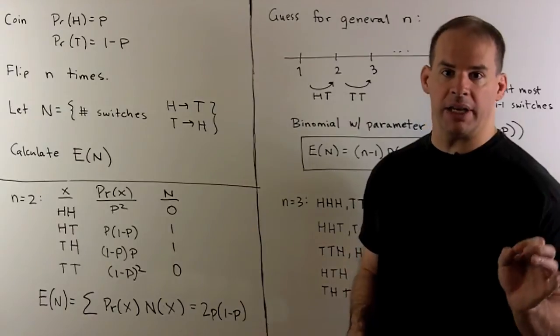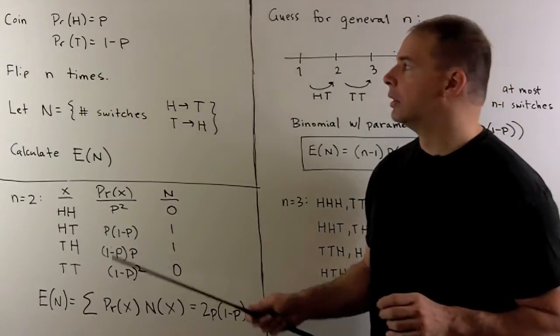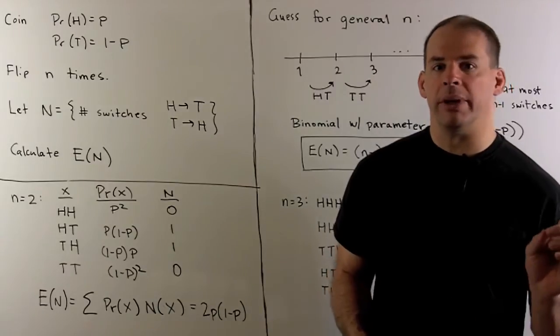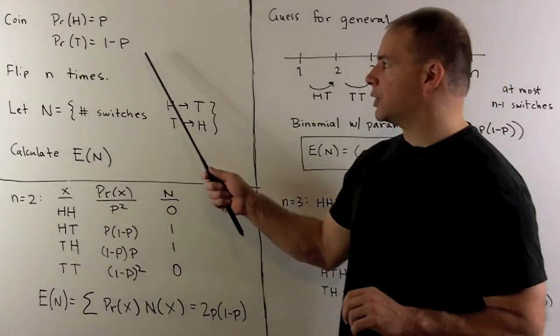Here's a problem on the conditional expectation formula. We have a coin. When I flip the coin, probability of heads is P. Probability of tails is 1 minus P.